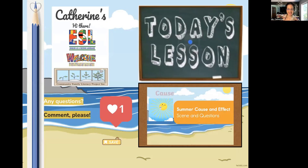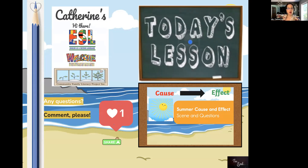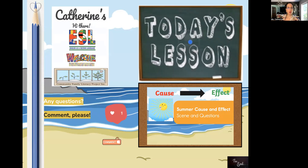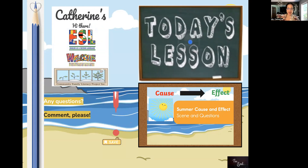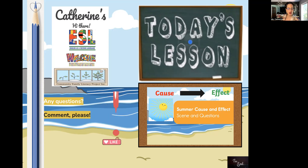Voilà, we're done! Congratulations! We just learned summer cause and effect scenes and questions. So what does cause and effect mean? It's the relationship between things or events. Because we're using summer scenes, the definition would be: the relationship between the events, the scene, the site, the location. Thank you everyone again — I'm so proud of you. Until next time!